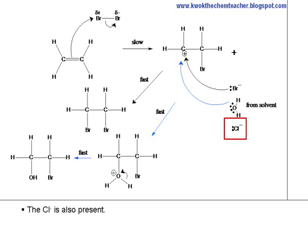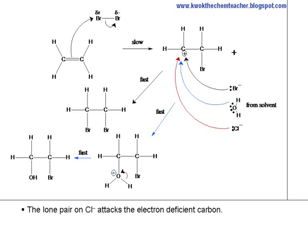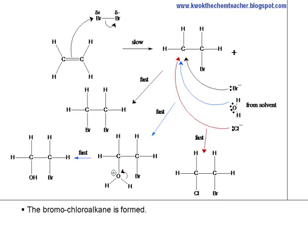The lone pair on Cl- attacks the electron deficient carbon center. The bromochloroalkane is formed.